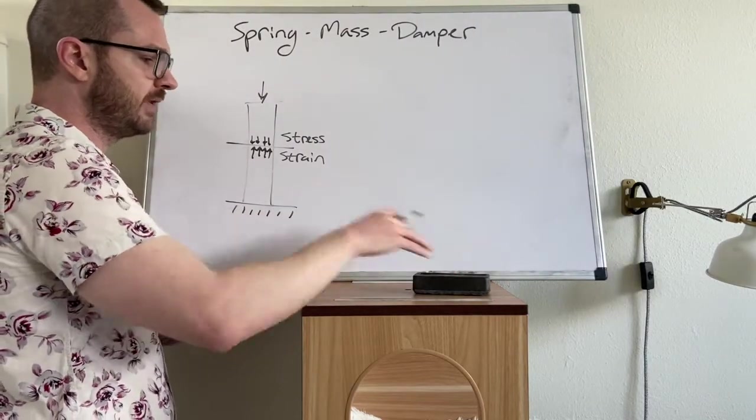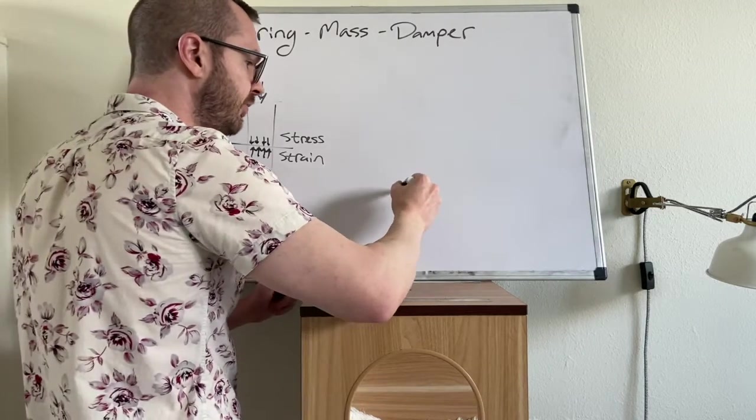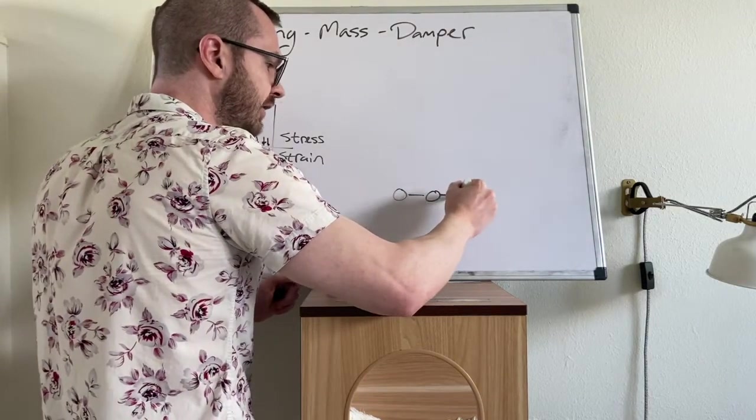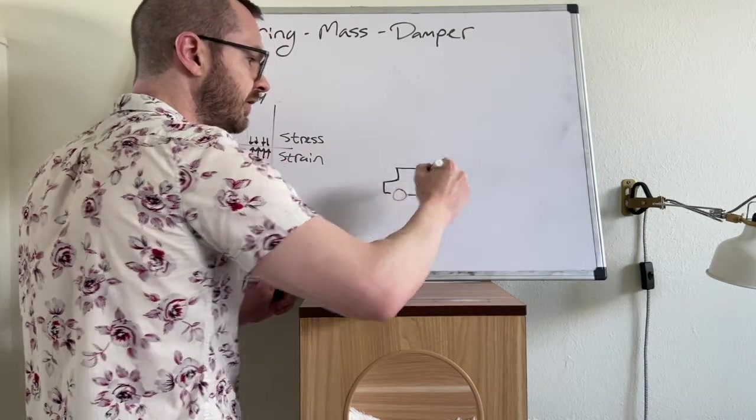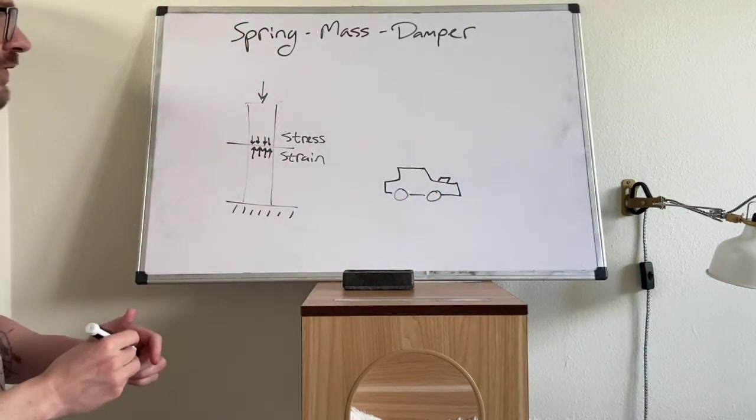Now we could model something like a column. We could also model something like a car's suspension system. Let's put a hood scoop on the car so we know it's a fast car.